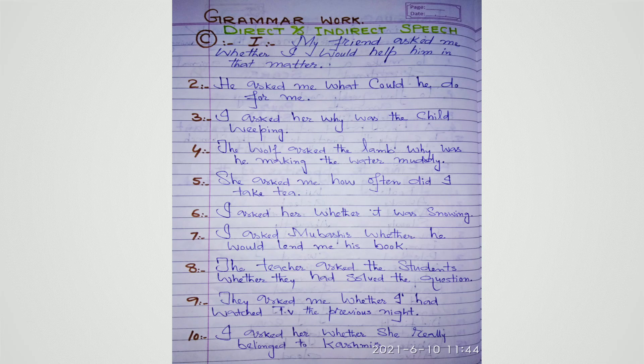Question 5: She said to me, 'How often do you take tea?' — She asked me how often I took tea. Question 6: I said to her, 'Is it snowing?' — I asked her whether it was snowing. A helping verb was present so 'whether' is used. Question 7: I said to Mubashir, 'Will you lend me your book?' — I asked Mubashir whether he would lend me his book. 'Whether' is used because the question starts with a helping verb.